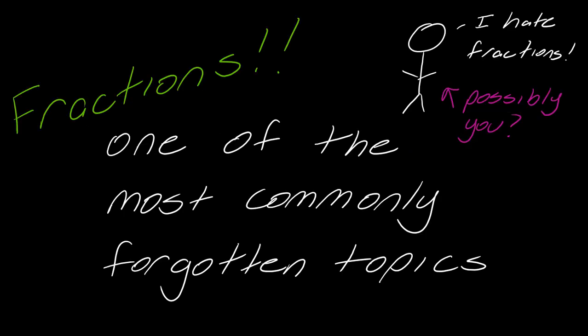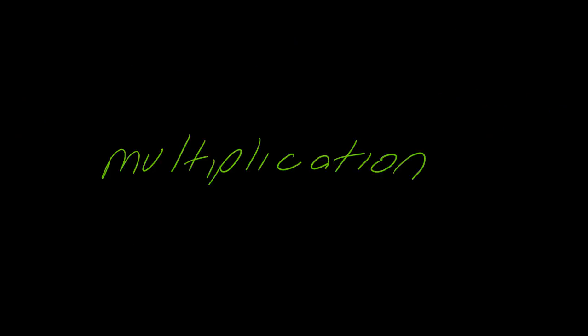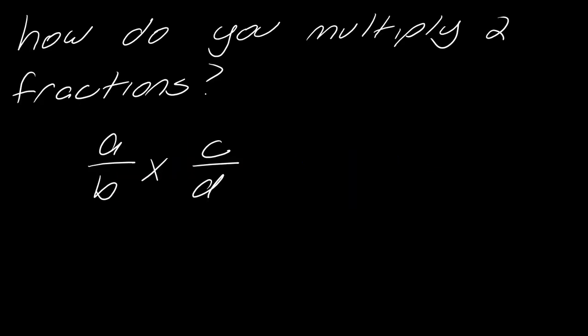Fractions — like I said, this is one of the most commonly forgotten topics in math. So let's talk about multiplication for fractions. How do you multiply two fractions? So I've got two fractions, A over B times C over D. The good news is this requires nothing with a common denominator. In fact, this is really the simplest of the fraction operations.